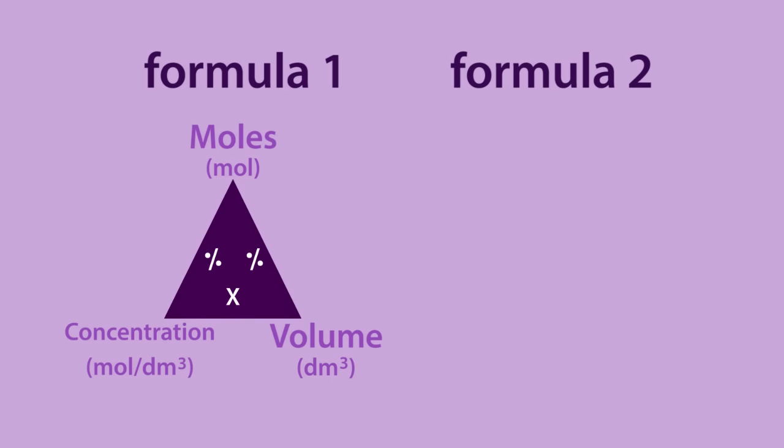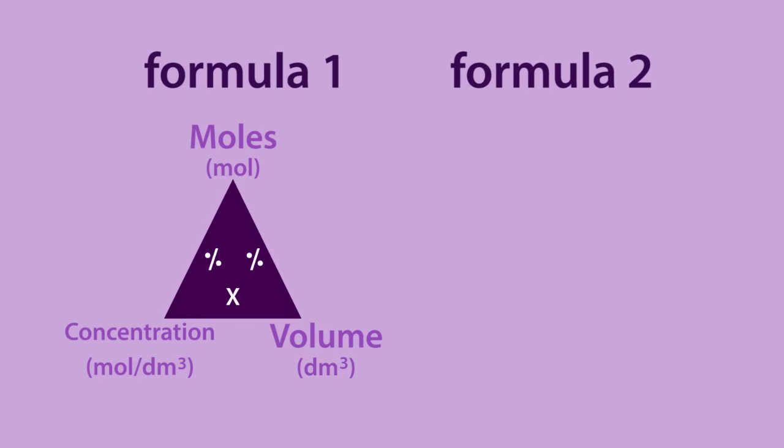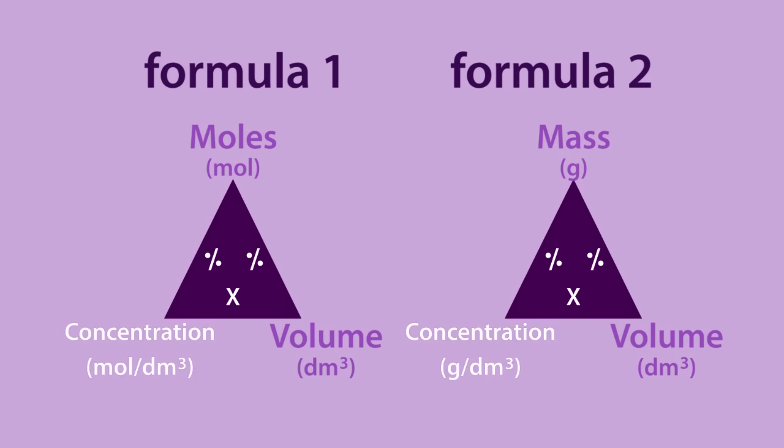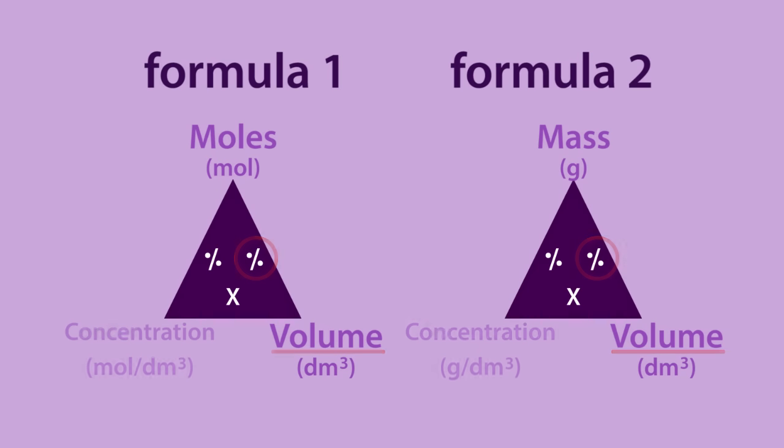In summary, there are two ways of calculating concentration. One involves moles, the amount of solute, the other, the mass of the solute. When calculating the concentration, both ways will involve dividing it by the volume. The formula triangle can be used to calculate any quantity by covering up the one you need to find and using a multiplication or a division as shown in the triangle.